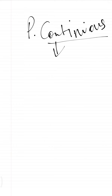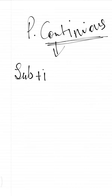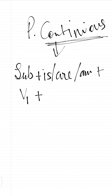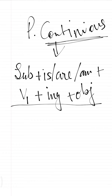Now let us come to present continuous tense. The word 'continuous' means any action that is still in process — like right now I am explaining you, so at present this explanation is still continued. To show such ongoing actions we use present continuous tense. The formula is: Subject + is/are/am + Verb (first form) + ing + Object.